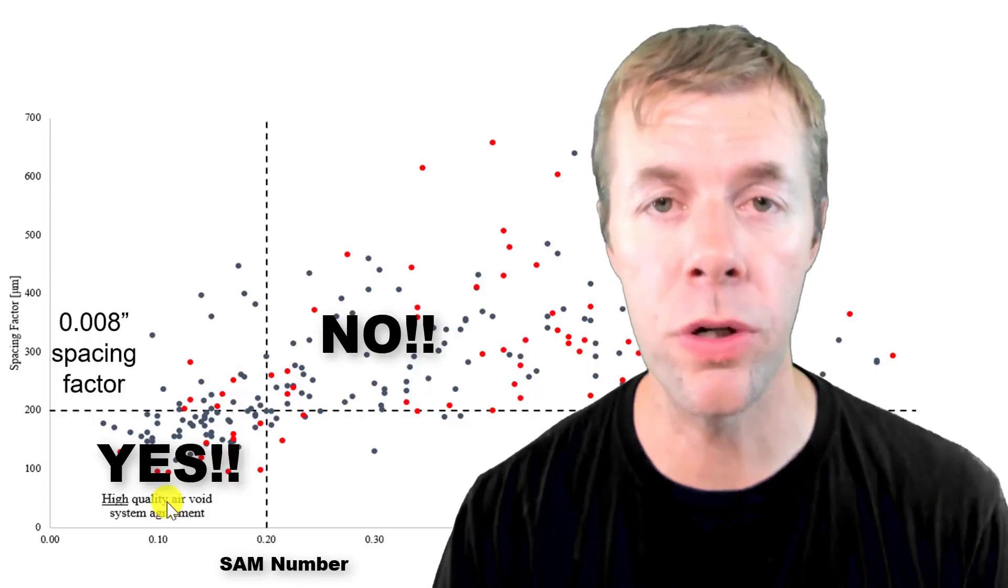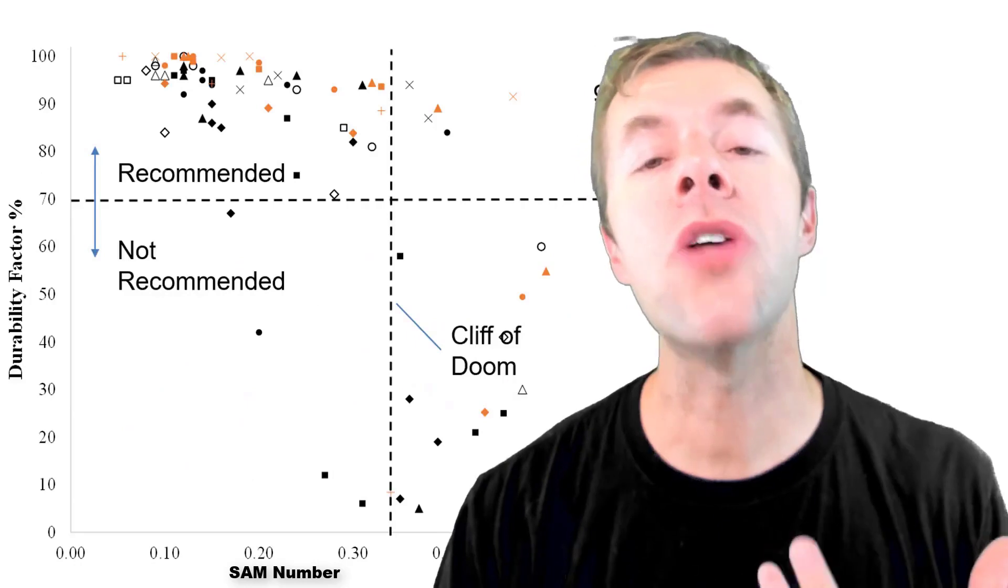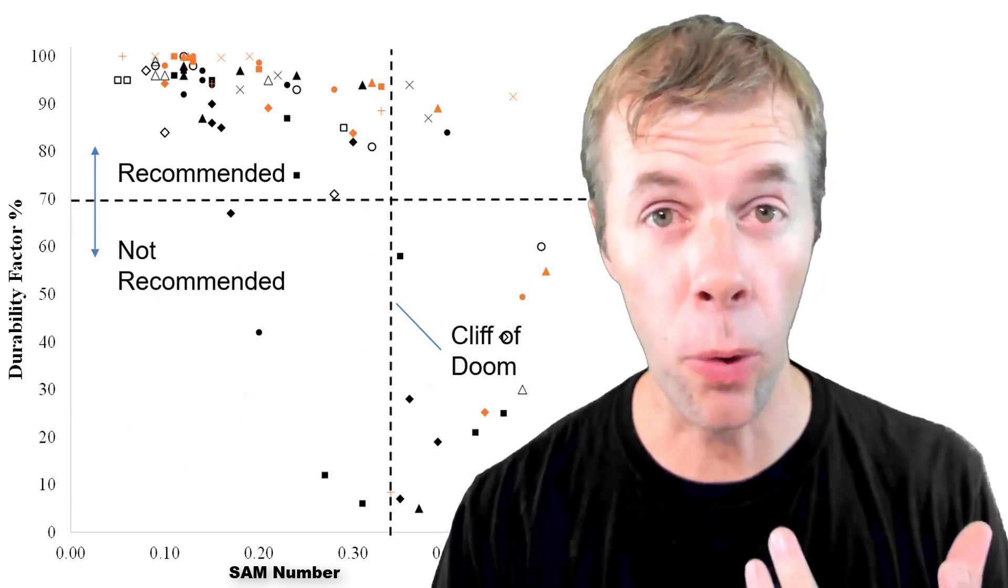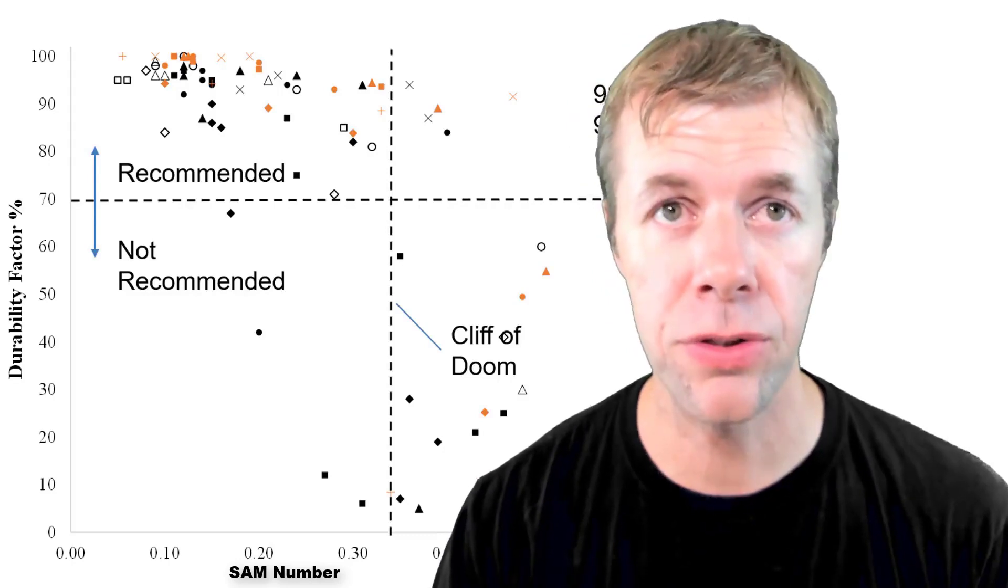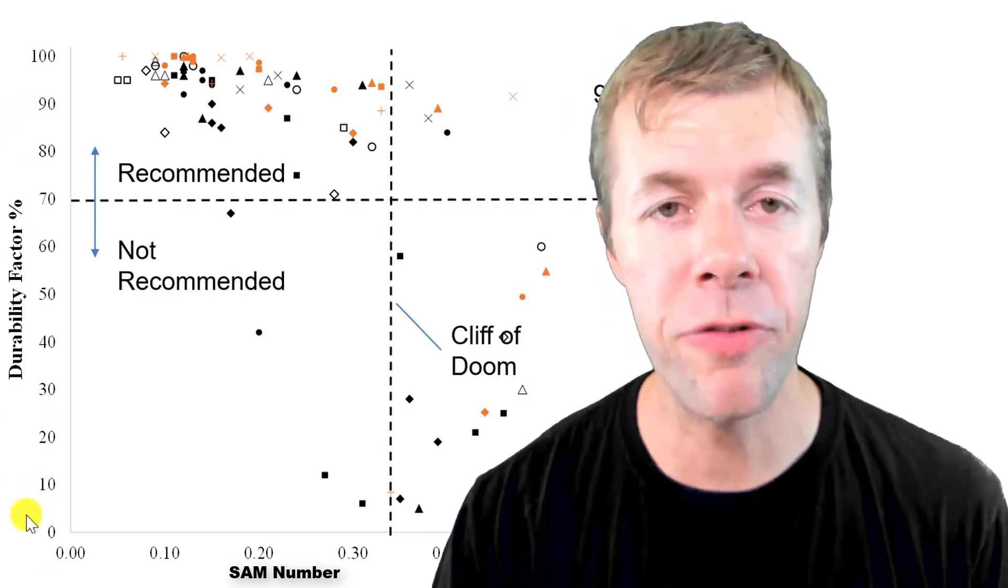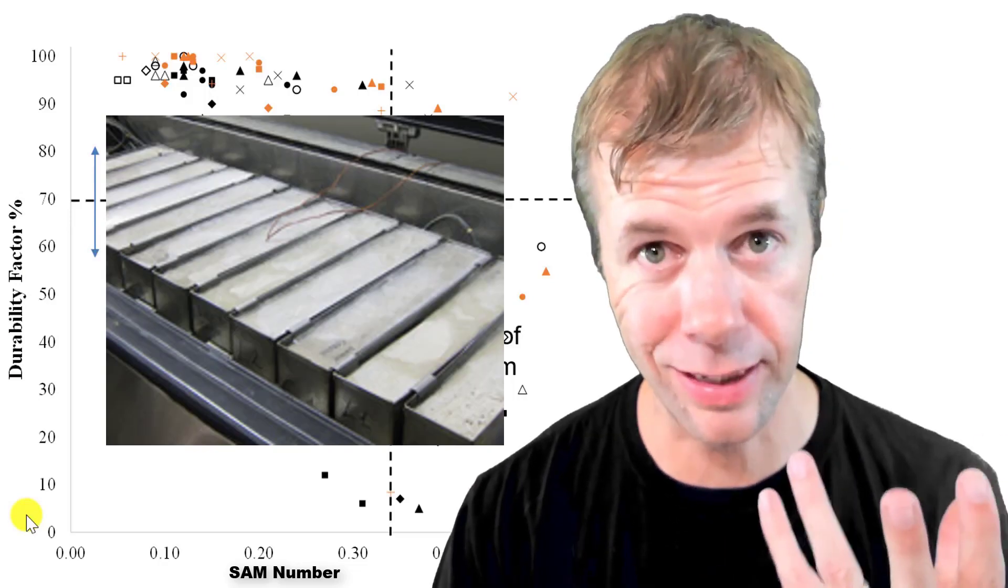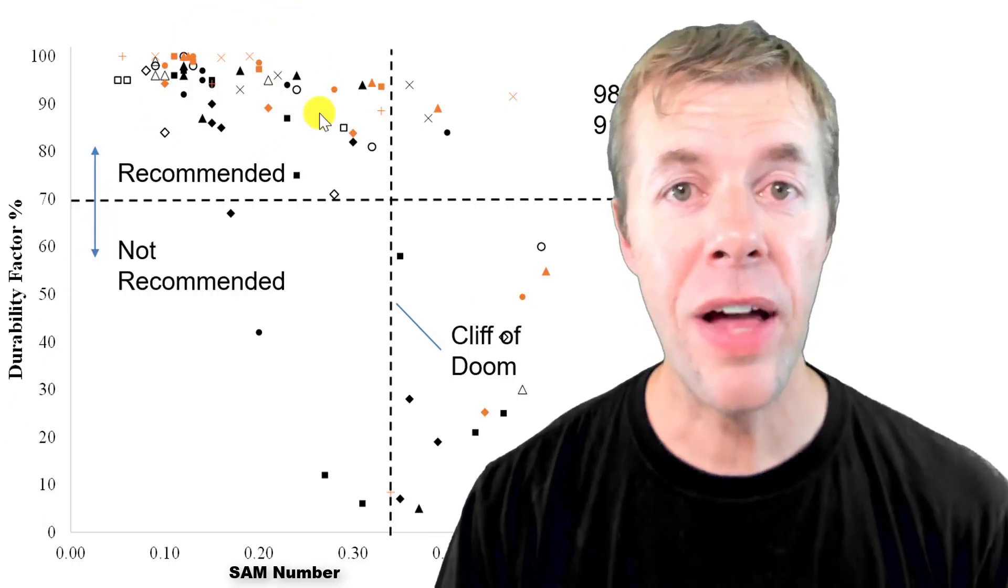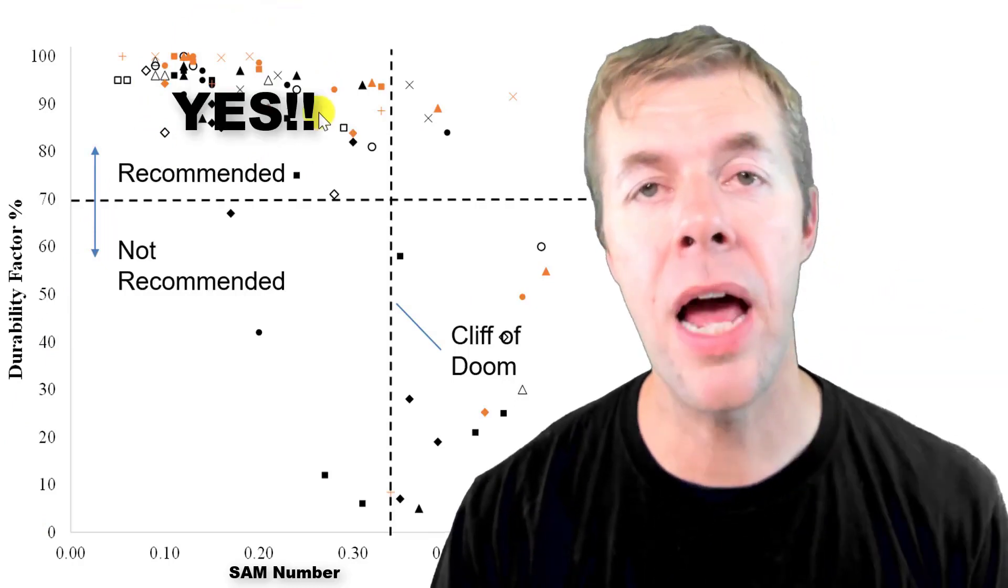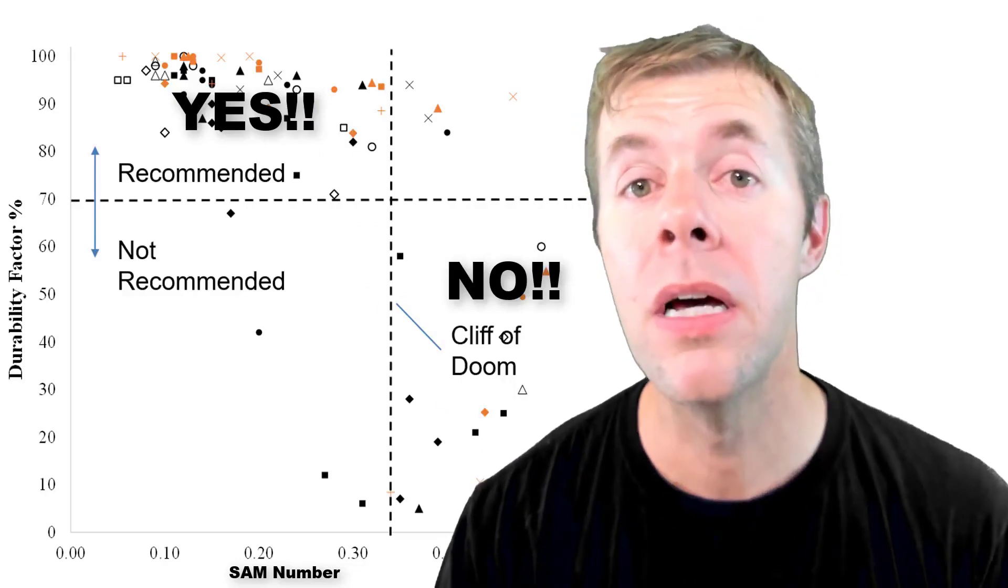But bubble spacing isn't everything. Freeze-thaw durability is also really important. In this plot we're showing the SAM number on the x-axis and we're showing performance in the rapid freeze-thaw test on the y-axis, the ASTM C666 test. In the upper left hand corner that's the yes, and the lower right hand that's the no. I call this lovingly the cliff of doom, and this is about a SAM number of 0.32. That's when failure starts to happen.